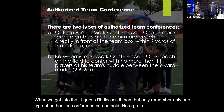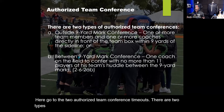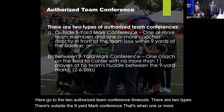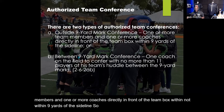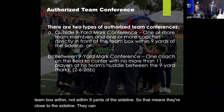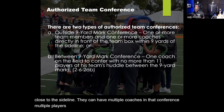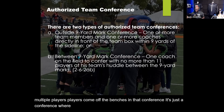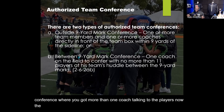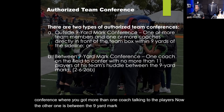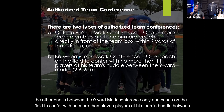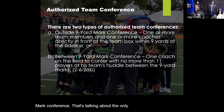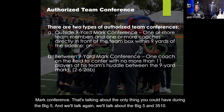There are two types of authorized team conferences. The first is the outside-nine-yard-mark conference, where one or more team members and one or more coaches meet directly in front of the team box, within nine yards of the sideline — multiple coaches and players can participate. The second is the between-nine-yard-marks conference, where only one coach goes on the field to confer with no more than 11 players in the team's huddle between the nine-yard marks. The outside conference is the only type permitted during a big five timeout.